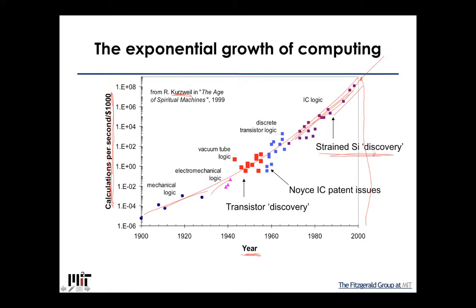We're going to go into detail about the strain silicon discovery — I put discovery in quotes only because, as we've pointed out many times, there's a lot of work that goes in beforehand. In this case, work in lattice mismatched materials actually led to the discovery of strain silicon, so it's not really a single point in time.